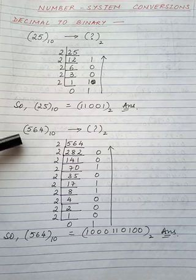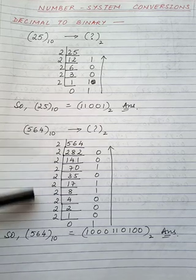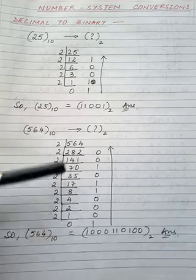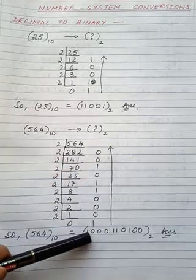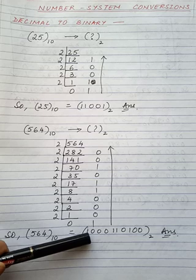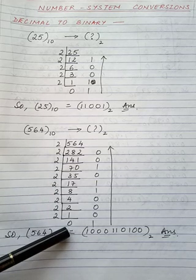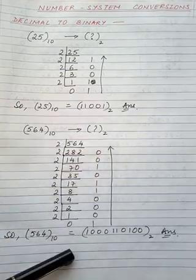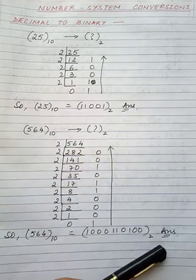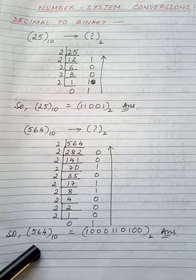See the next example: 564 base 10. Every time it is divided by 2, the quotient values are written here and the remainder values are written here. We divide the quotient by 2 till we get 0 at the end. Then the remainder values are written from bottom to top. This is the binary equivalent of 564 base 10.